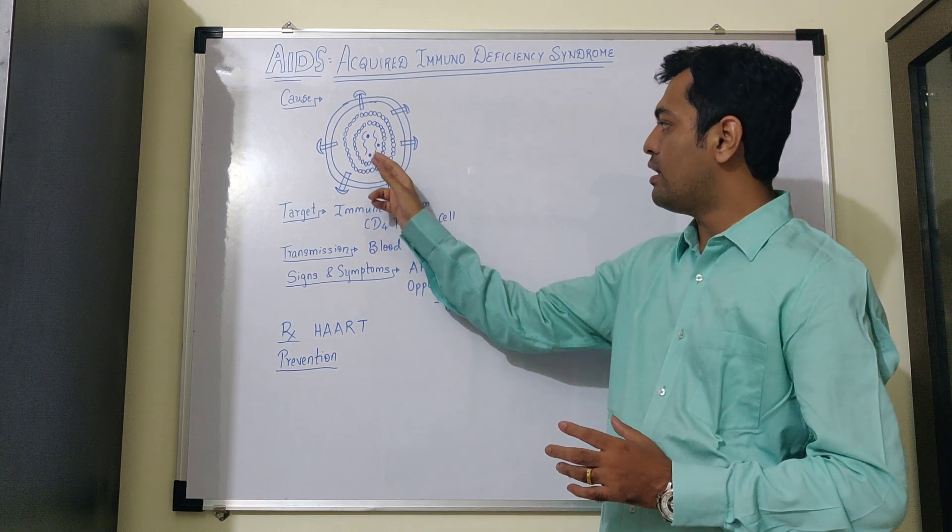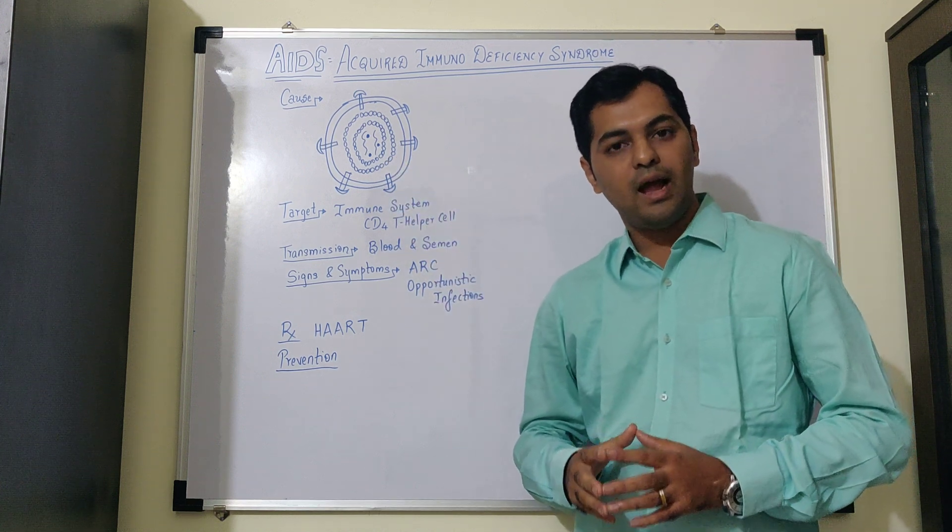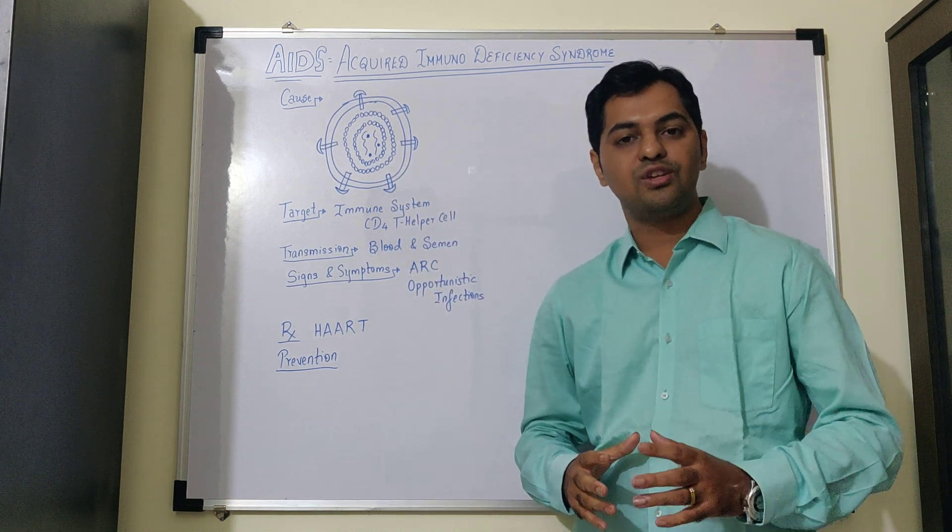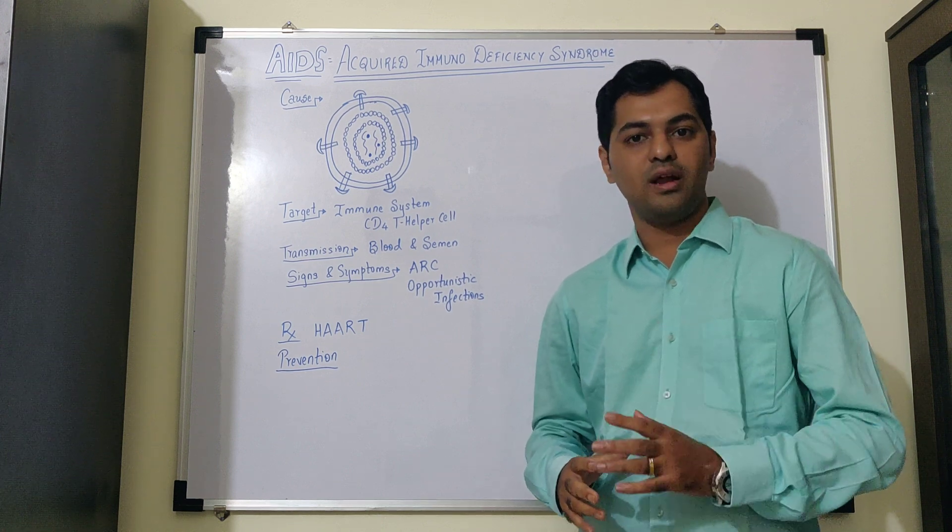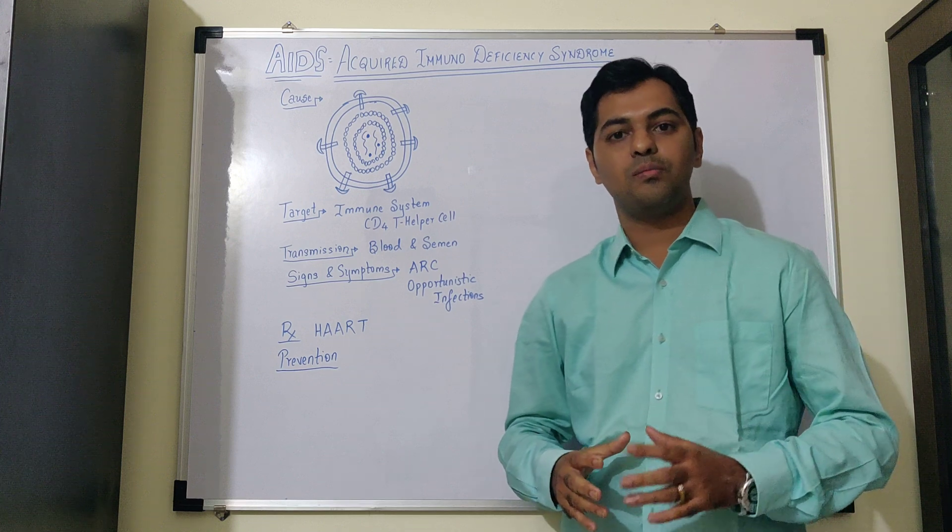It has two protein layers, that is an inner protein coat and outer protein coat. And the genetic material of HIV is RNA, which is single-stranded. And as you can observe, there are two single-stranded RNAs which are present.